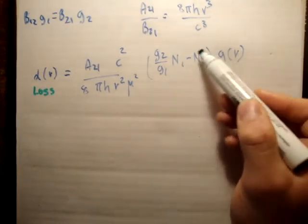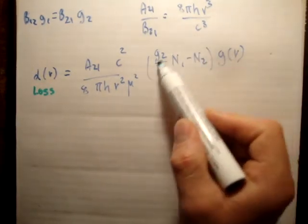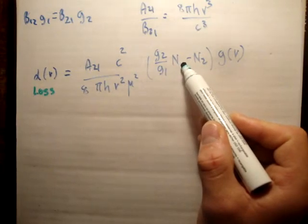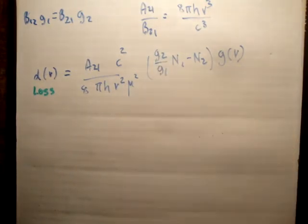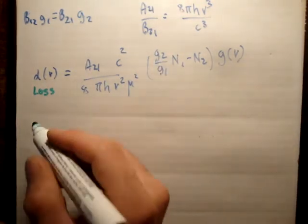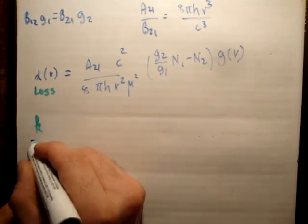So, we're saying this time the population in level 2, the higher energy level, is greater than the population in energy level 1 times the degeneracies.